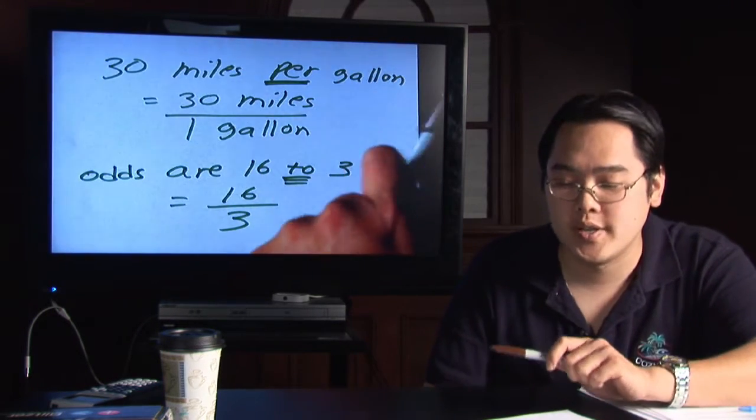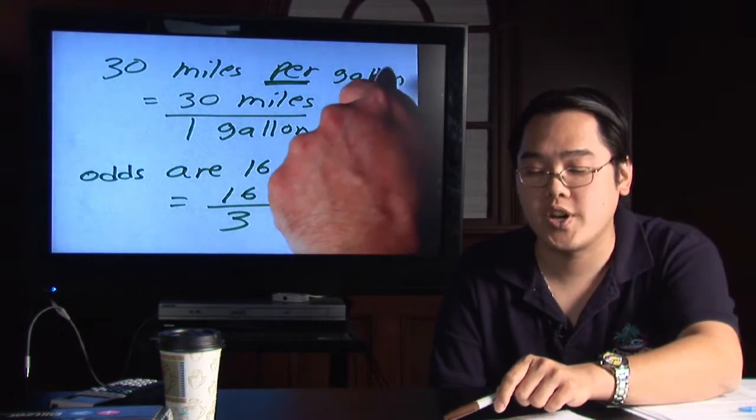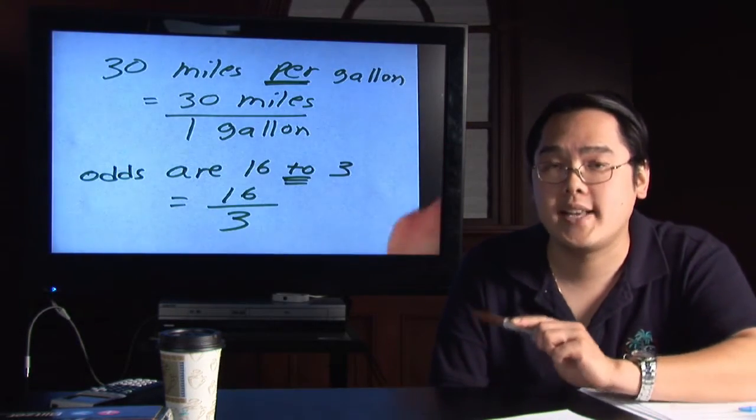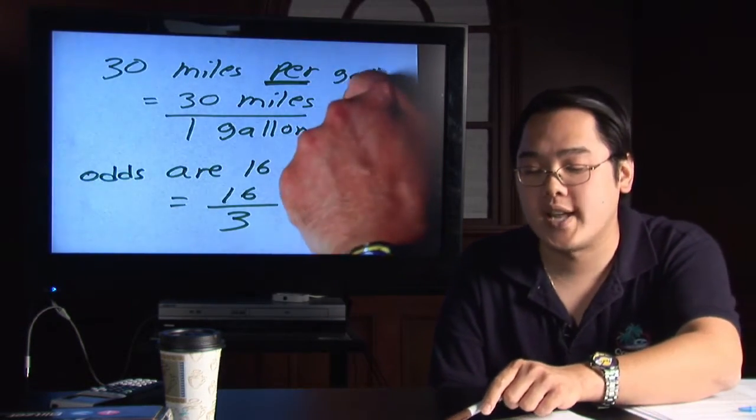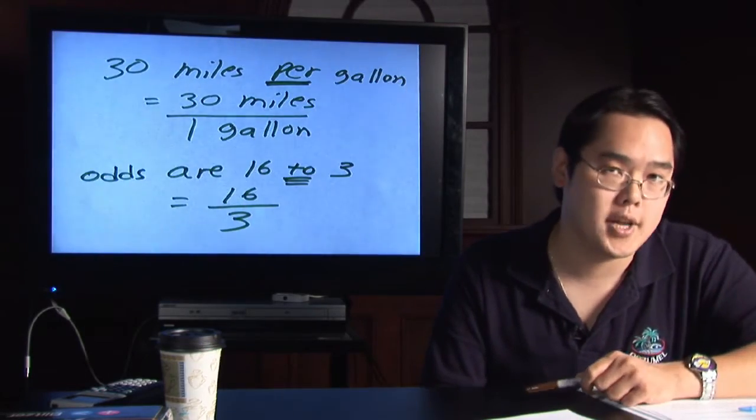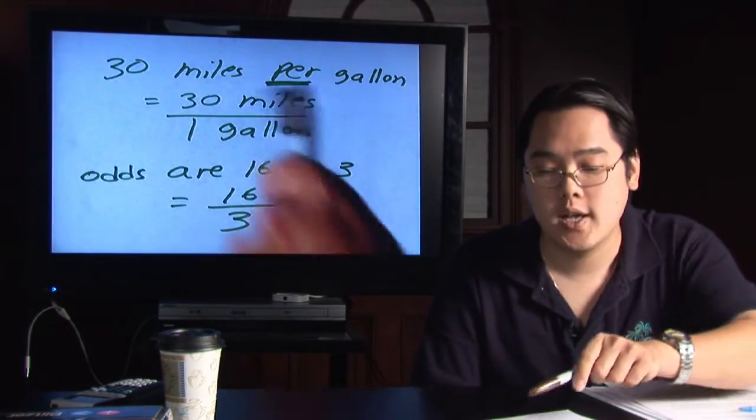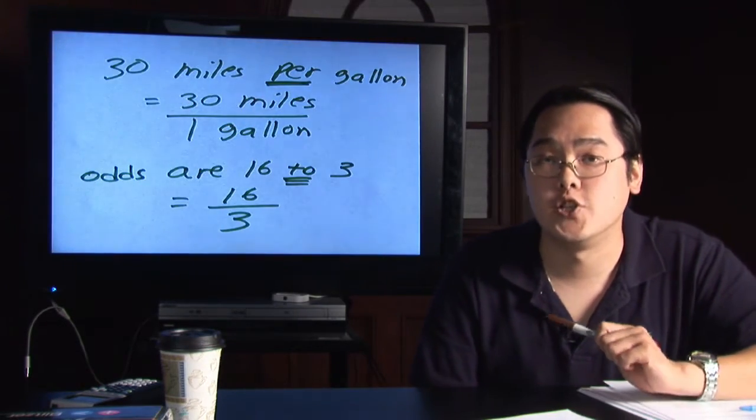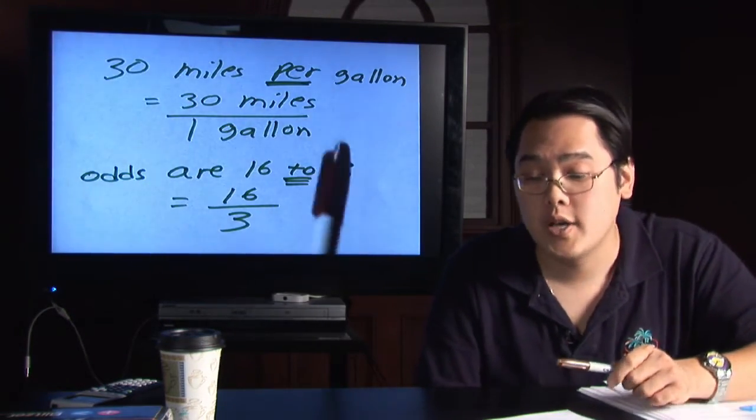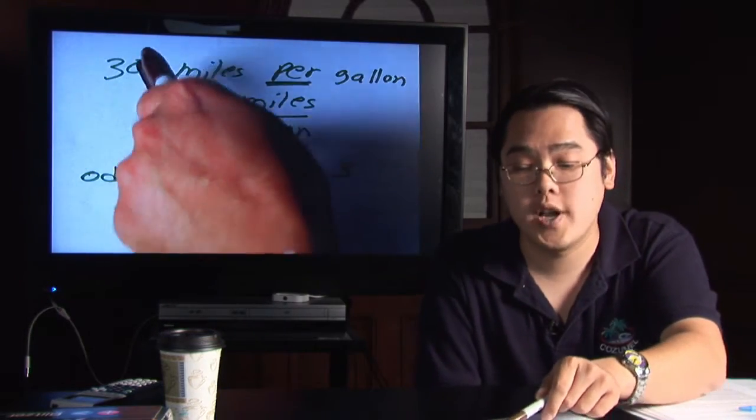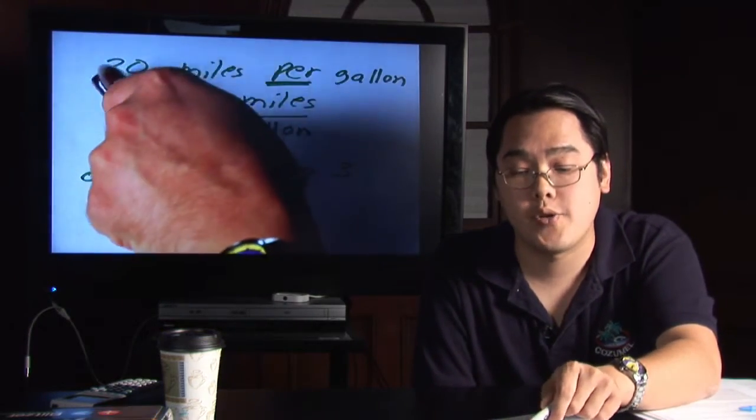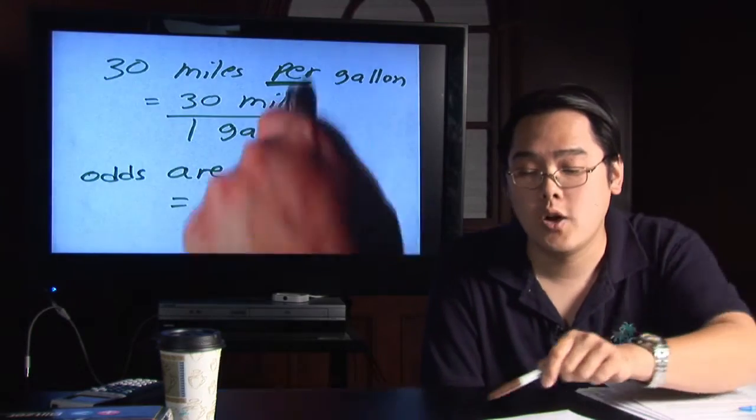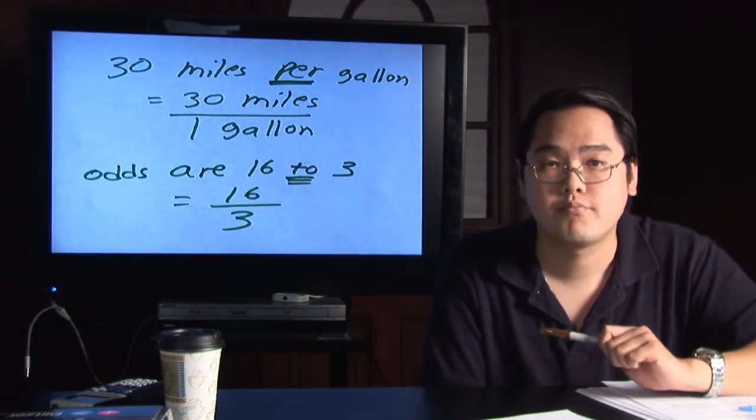Sometimes the one is not written, but because the word gallon is right after the per, that tells you right away that the word gallon is going to go in the denominator. That will always be the case. Where does that put the 30 miles? That tells you instantly that 30 miles is in the numerator on top. So to indicate this as a proportion, 30 miles per gallon is going to be 30 miles on top, one gallon at the bottom.